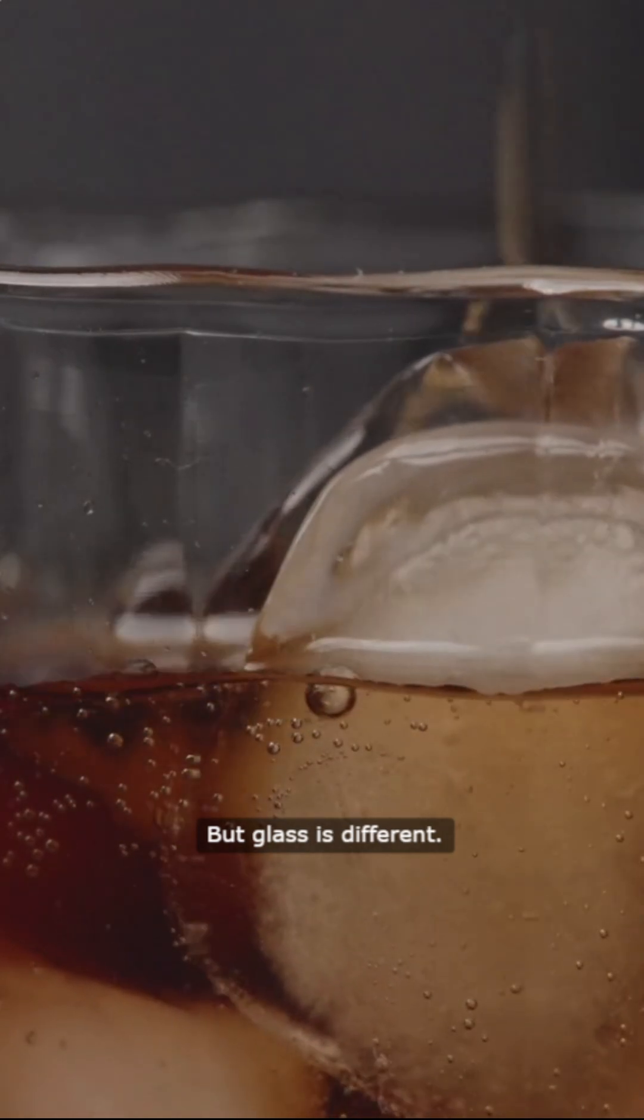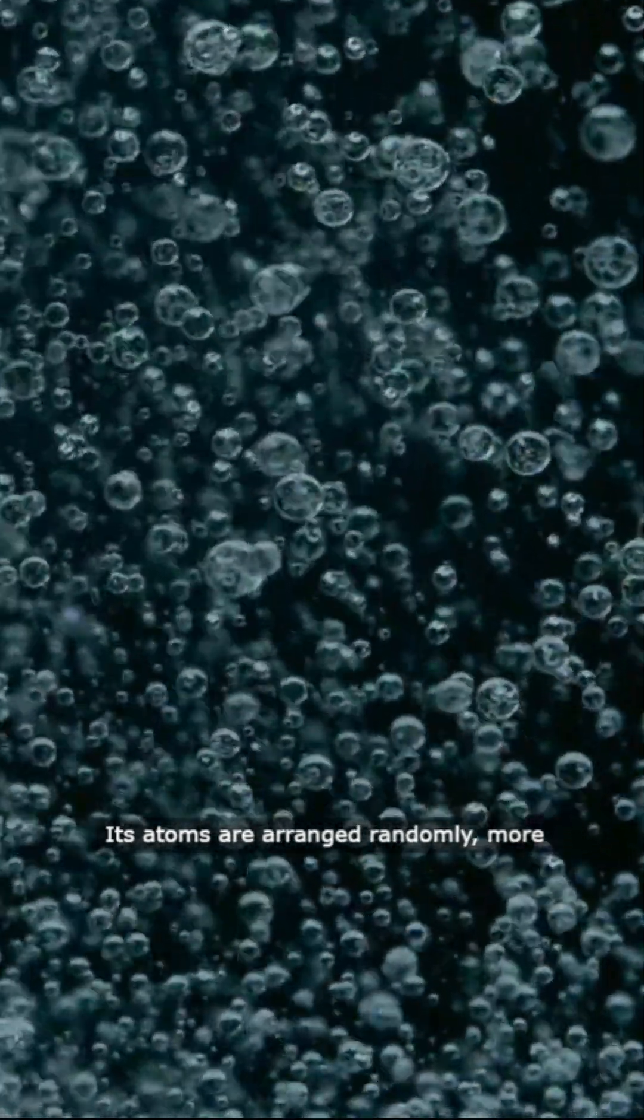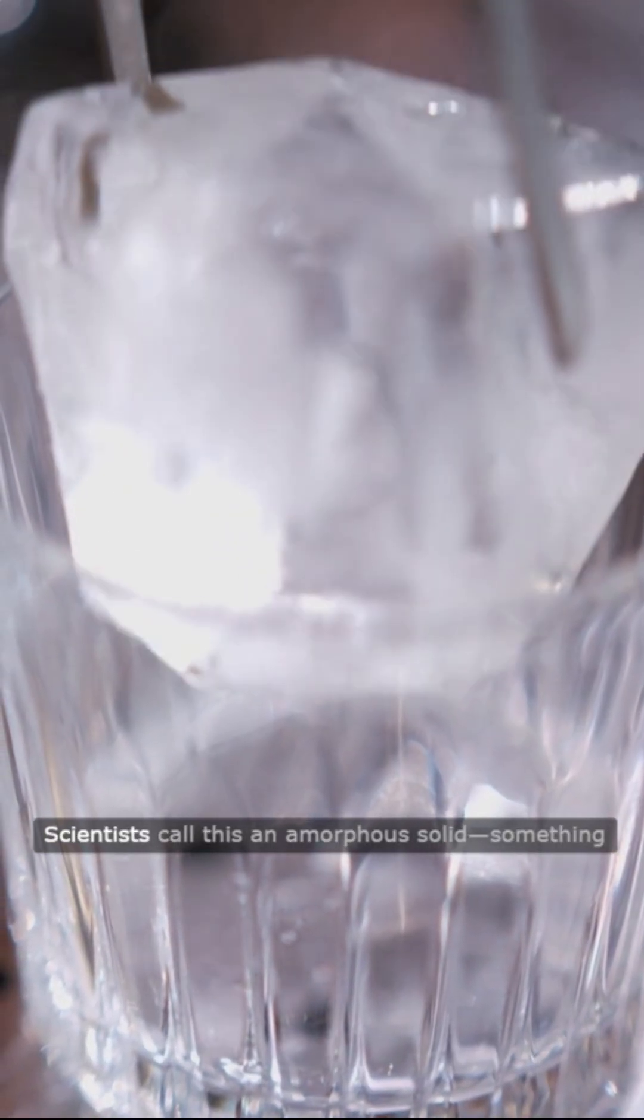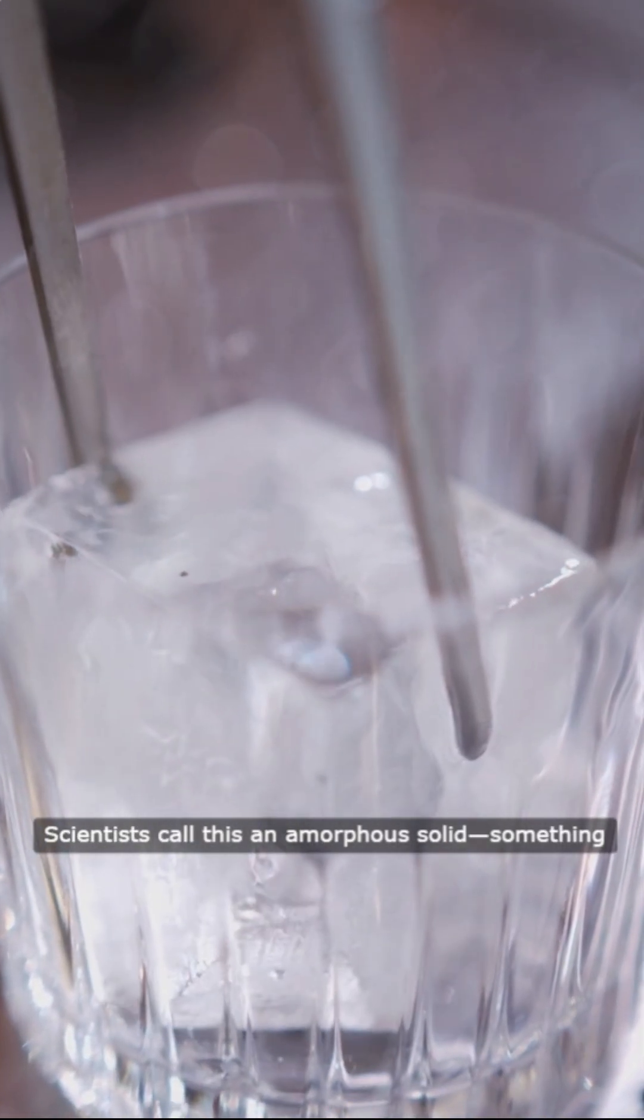But glass is different. Its atoms are arranged randomly, more like a liquid that has been frozen in place. Scientists call this an amorphous solid, something between a solid and a liquid.